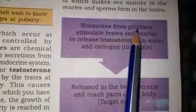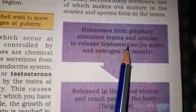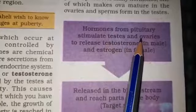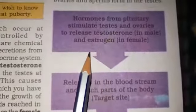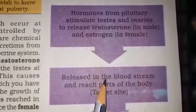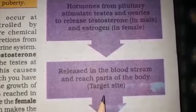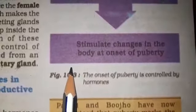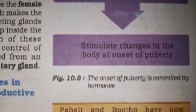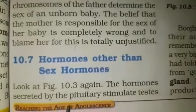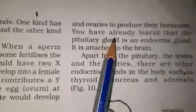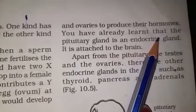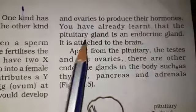Look at figure 10.3 — hormones from the pituitary gland. The pituitary gland stimulates the testes and ovaries, which then release testosterone and estrogens respectively. These hormones are released directly into the bloodstream and reach the target organ. The hormones secreted by the pituitary stimulate the testes and ovaries to produce their hormones.